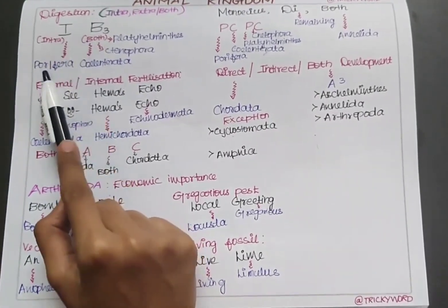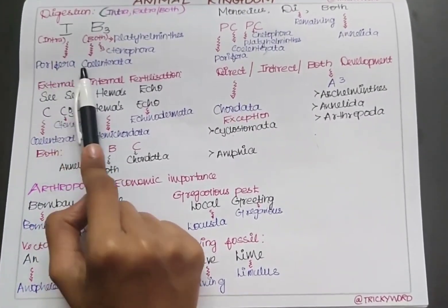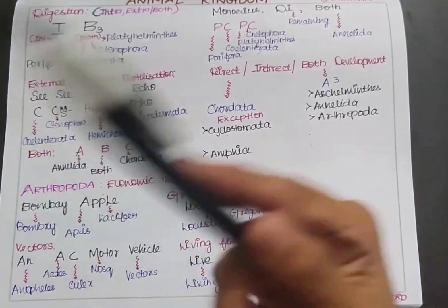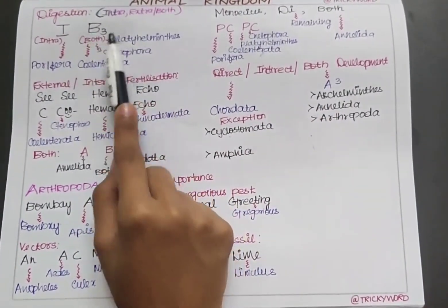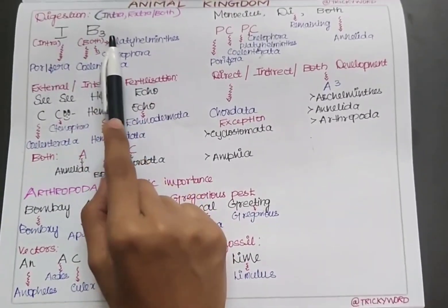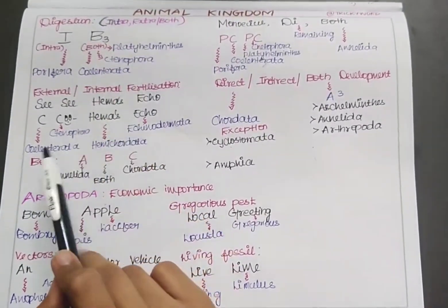Intracellular digestion is done by Porifera, and both types of digestion are shown by Cnidaria, Ctenophora, and Platyhelminthes - three phyla. That's why I mentioned B3. So the mnemonic is IB3.